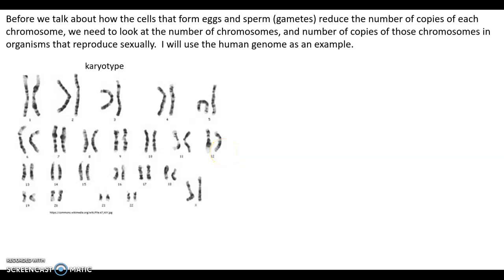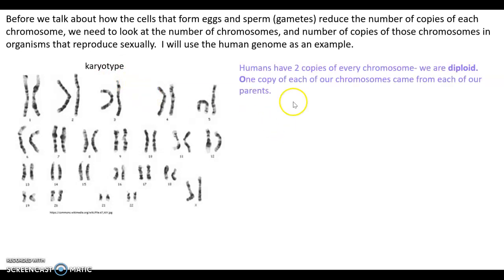Before we talk about how gamete-forming cells reduce chromosome copies, we need to look at the number of chromosomes in sexually reproducing organisms. Using the human genome as an example: shown here is a picture of the chromosomes in a human, referred to as a karyotype. Humans have two copies of every chromosome — we are called diploid. You can see two copies of chromosome one, two copies of chromosome two, all the way through chromosome 22. In total we have 46 chromosomes, but 23 pairs.